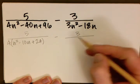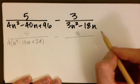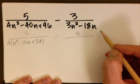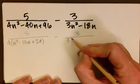Our numerator on our second fraction stays the same at 3, and it looks like we can factor out a 3 from our denominator.